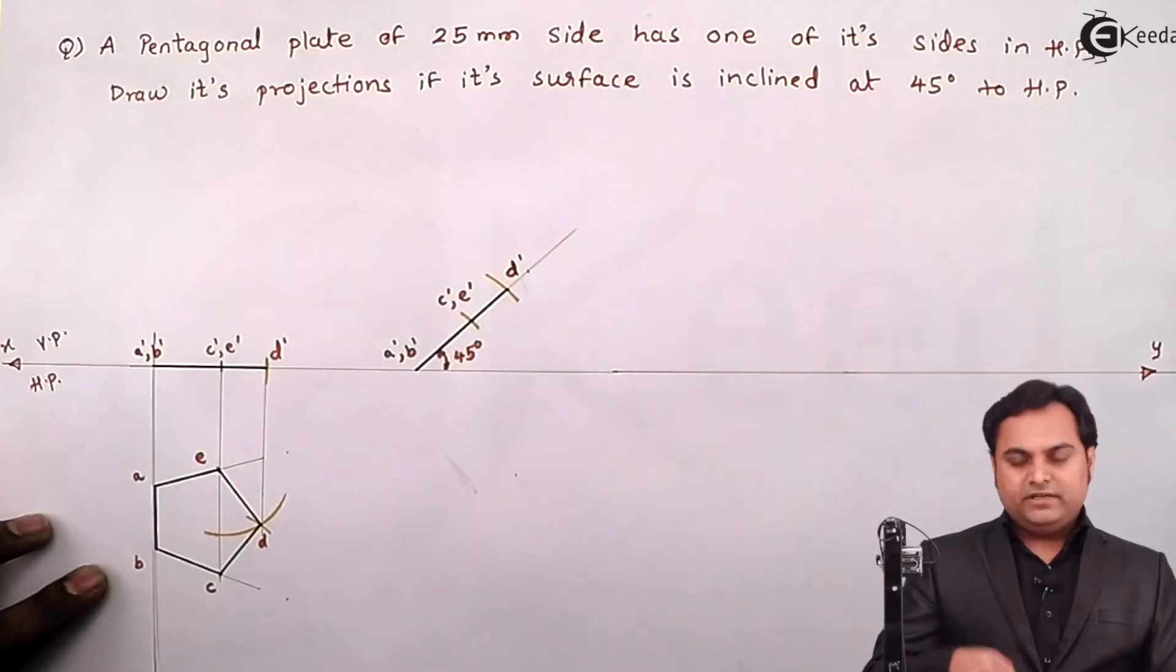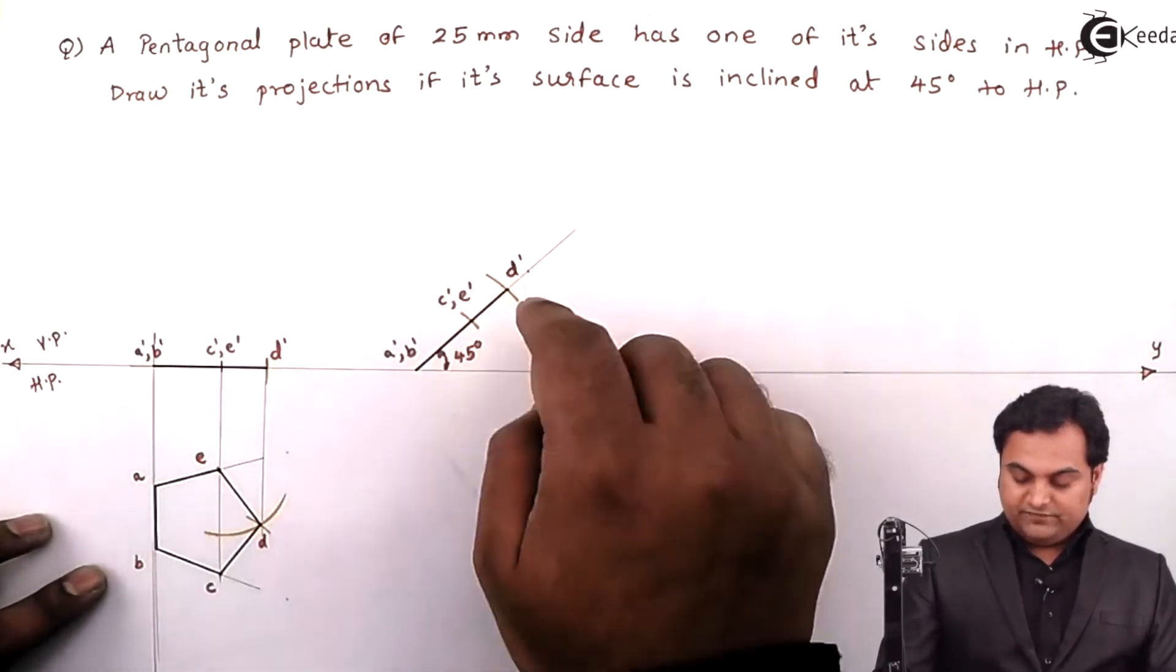After this, here we are having the front view of this plane. It means AB has been fixed and from D it has been lifted, that is the pentagon. So when it is lifted the front view is in this form. Now I have to project the top view for that.